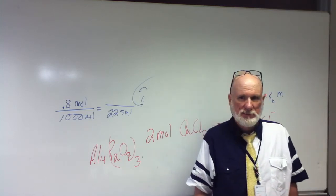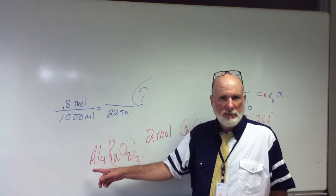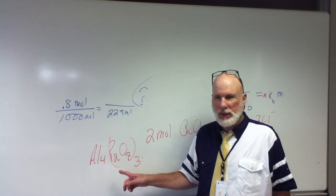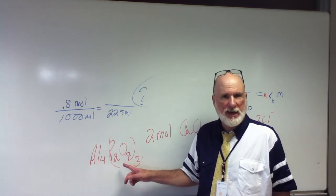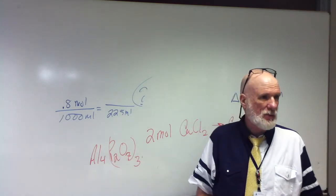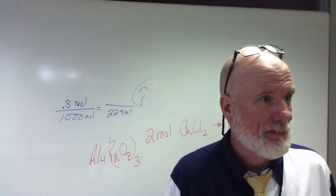So you're going to have four aluminum ions with plus three charge and three pyrophosphate ions with minus four charge. So you'll have seven. So N would be seven.